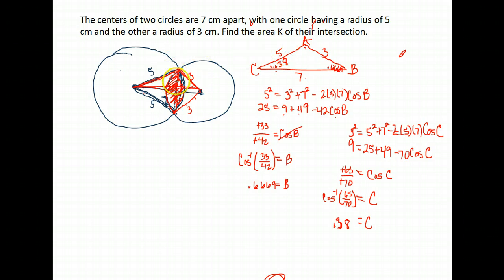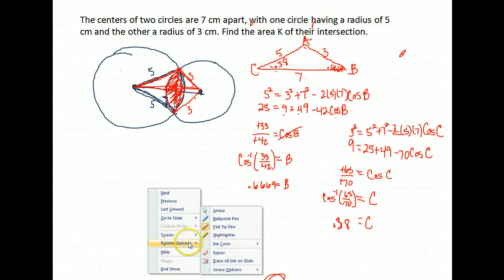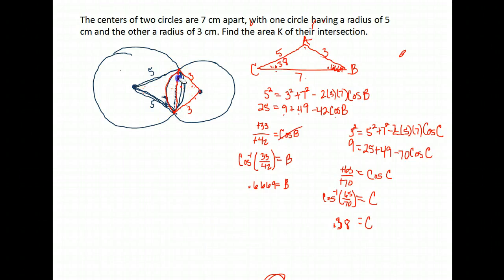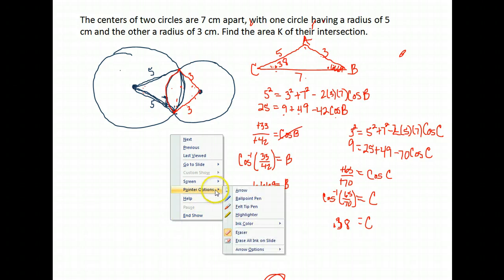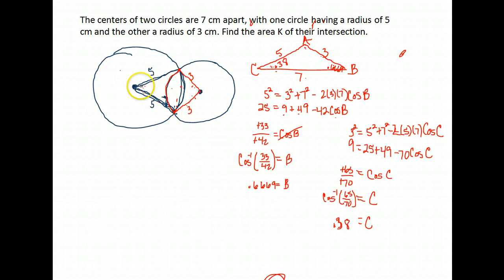Our original goal was to find each of the segments, so we needed this full angle. Now remember this was just half of the angle. So now I'm going to take 2 times 0.38 to get my full angle in the center there. And that gives me 0.76. I'm going to find the area of the segment for this circle, this part right here that's cut off when the circles intersect.